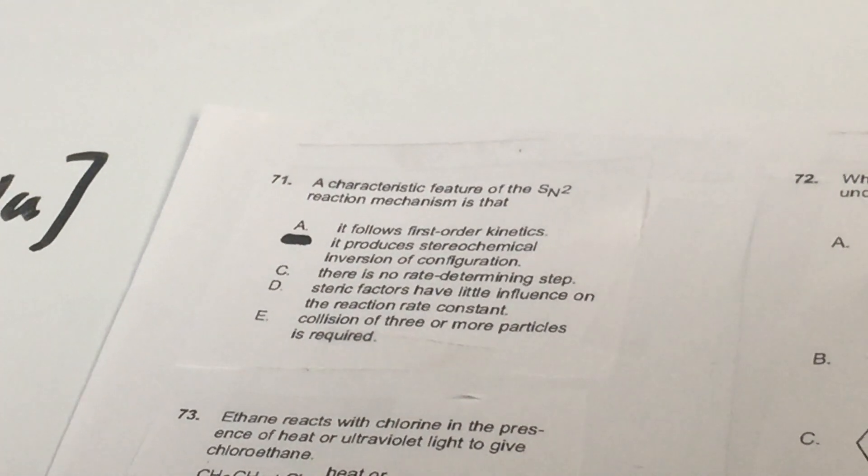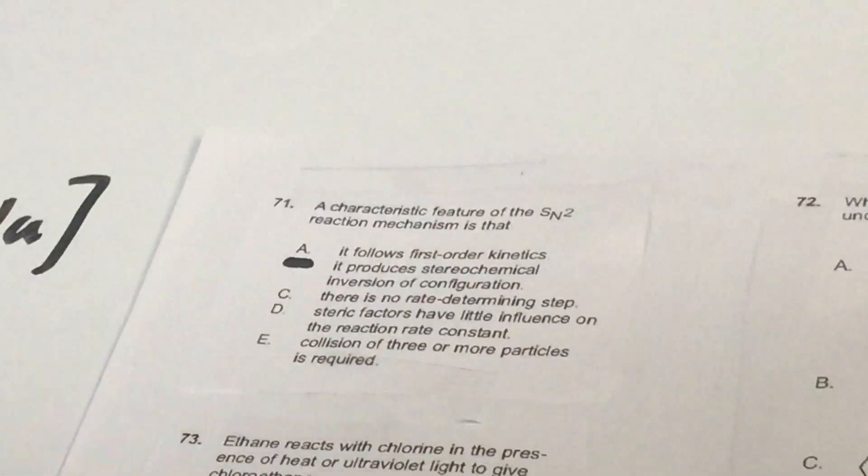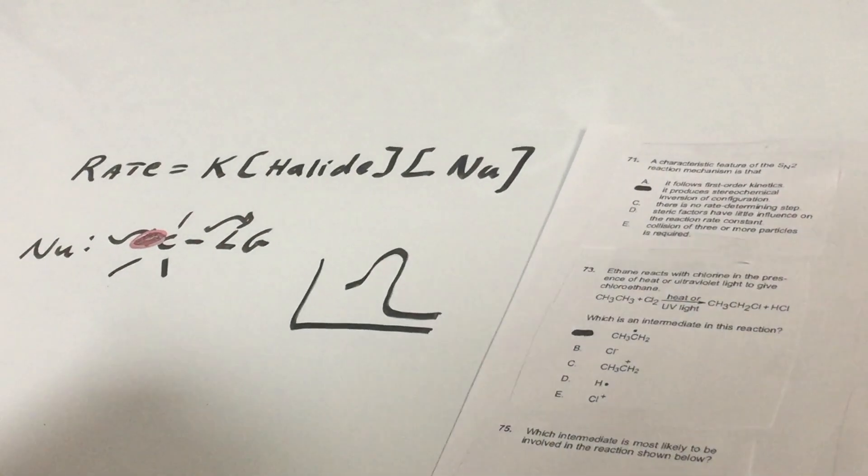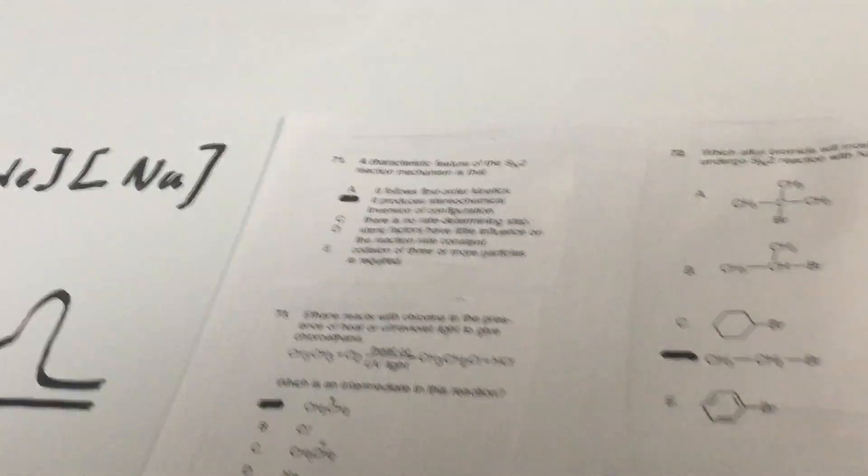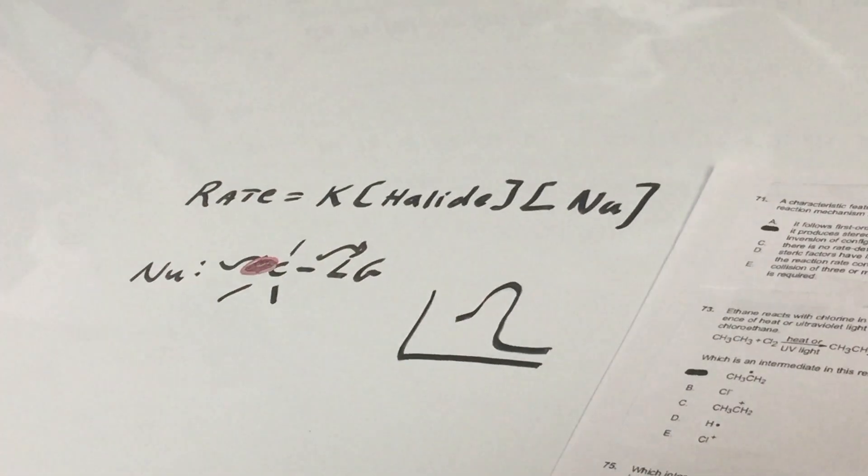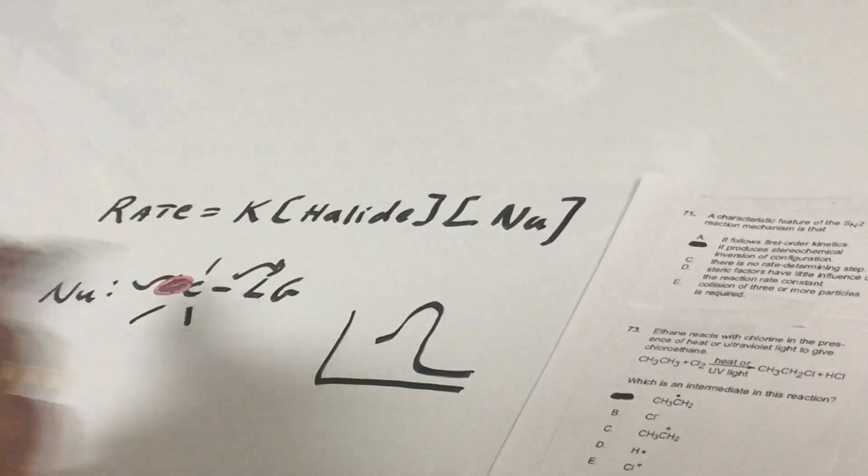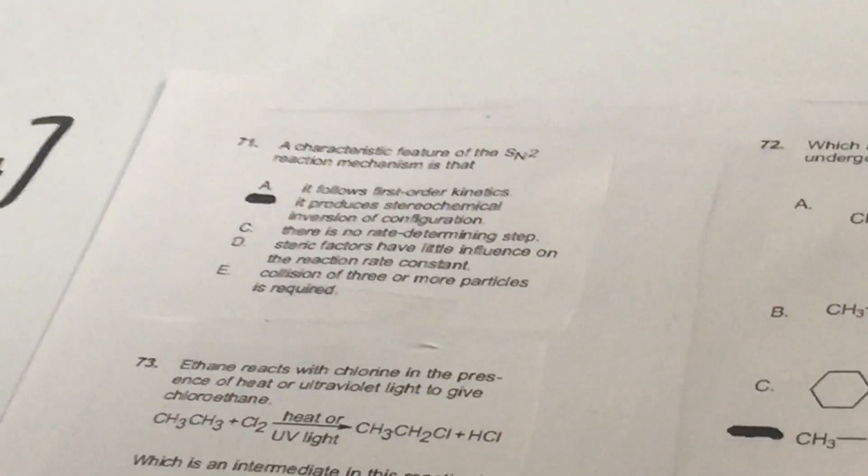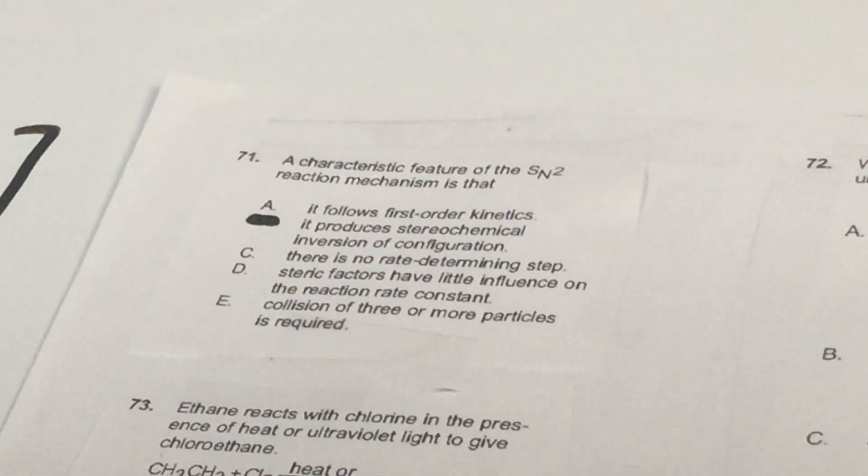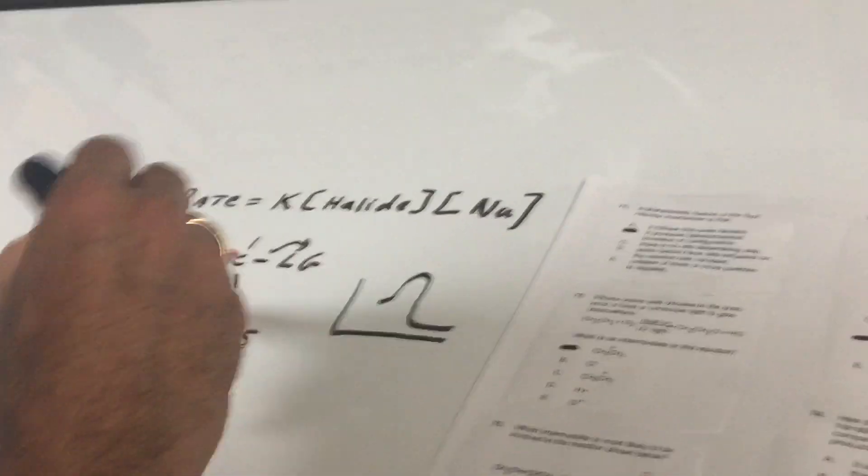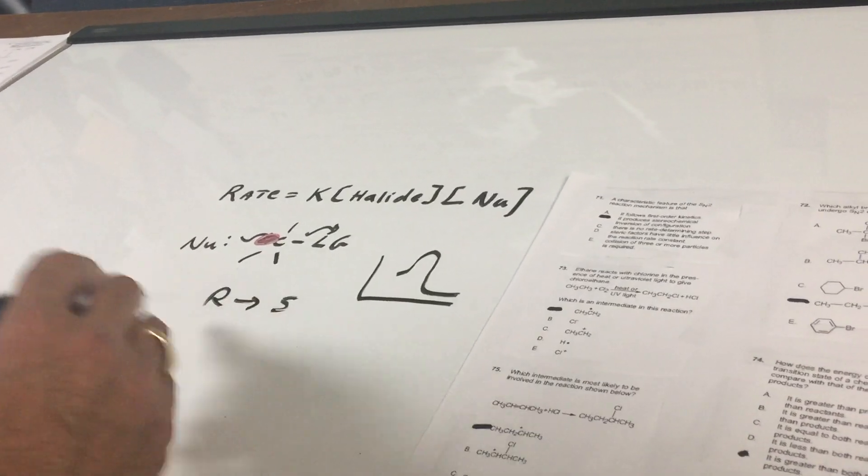So as you can see, choice A, it says it follows first-order kinetics. No, this is second-order kinetics. That's wrong. Let's skip B for a minute. It says there is no rate-determining step. That's silly. It's one step. So if it's one step, that single step has got to be the rate-determining step. Then it says steric factors have little influence. Oh, bullshit. Steric factors have little influence. If you were going to attack something from the backside, you better have little guys. You have big guys, you're not going to be able to get through to attack the antibonding orbital. So that's silly. Collision of three or more particles is required. There's only two particles required. And choice B, which is the correct answer, it produces a stereochemical inversion of configuration. That is true. Anytime you do an SN2 reaction and you start with an R and there's a chiral carbon that you're attacking, that chiral carbon is inverted to become S or vice versa.